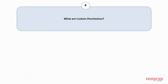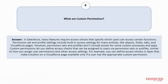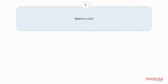Question number six: What are custom permissions? In Salesforce, many features require access checks that specify which users can access certain functions. Permission set and profile settings include built-in access settings for many entities like objects, fields, tabs, and Visualforce pages. However, permission sets and profiles don't include access for some custom processes and apps. Custom permissions let you define access checks that can be assigned to users via permission sets or profiles, similar to how you assign user permissions and other access settings. For example, you can define access checks in Apex that make a button or Visualforce page available only if a user has the appropriate custom permission.